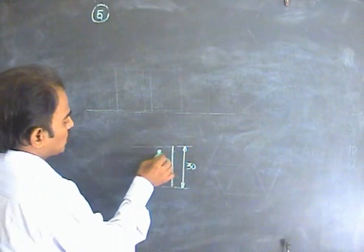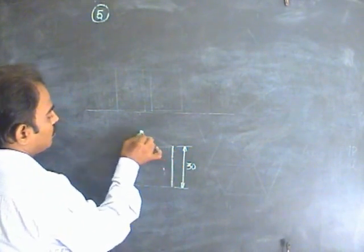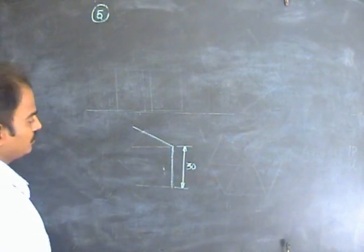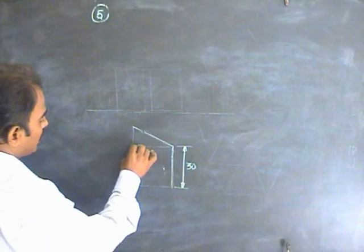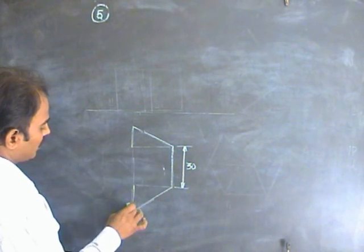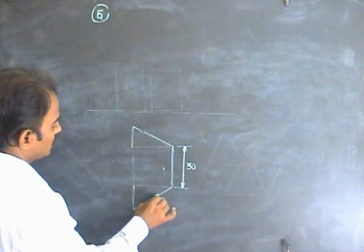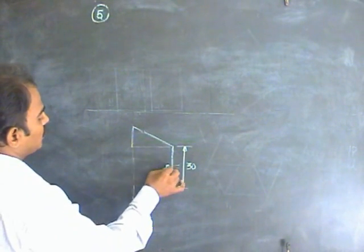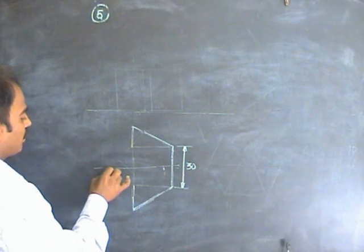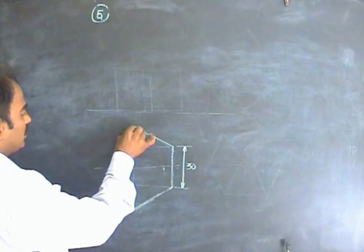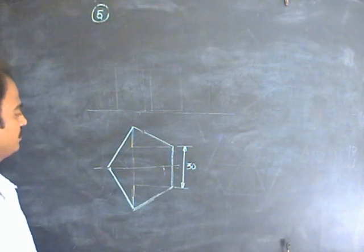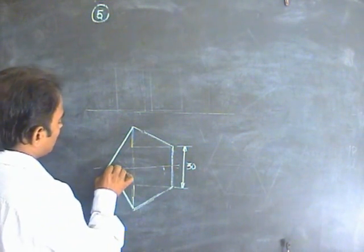The included angle for the pentagon is 108 degrees, and 90 degrees is already available. Put 18 degrees extra, then take the same side length along the 18-degree line. You will get the shape. Take this gap and duplicate the pentagon. From here, cut with a 30 mm arc to get the exact pentagon. All sides should be equal.